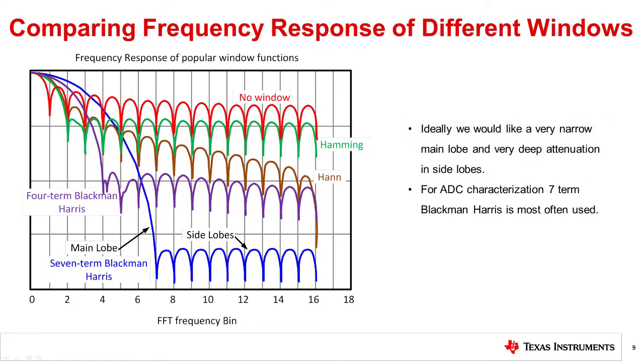For the purpose of ADC analysis, the wide main lobe isn't a significant problem, so the seven-term Blackman-Harris window is used to achieve the least amount of spectral leakage.